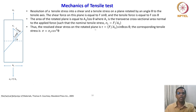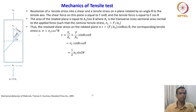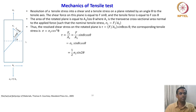Thus, the resolved shear stress on the rotated plane is τ = (F/A₁) sin θ cos θ, and the corresponding tensile stress is σ = σ₁ cos²θ. The shear stress is the shear force divided by the area, which equals (F/A₁) sin θ cos θ. The rotated plane is larger by a factor of 1/cos θ. This can be rewritten as τ = ½ σ₁ sin 2θ, and σ = ½ σ₁ (1 + cos 2θ), which allows representation on a Mohr circle plotted with 2θ—a form we have already studied.